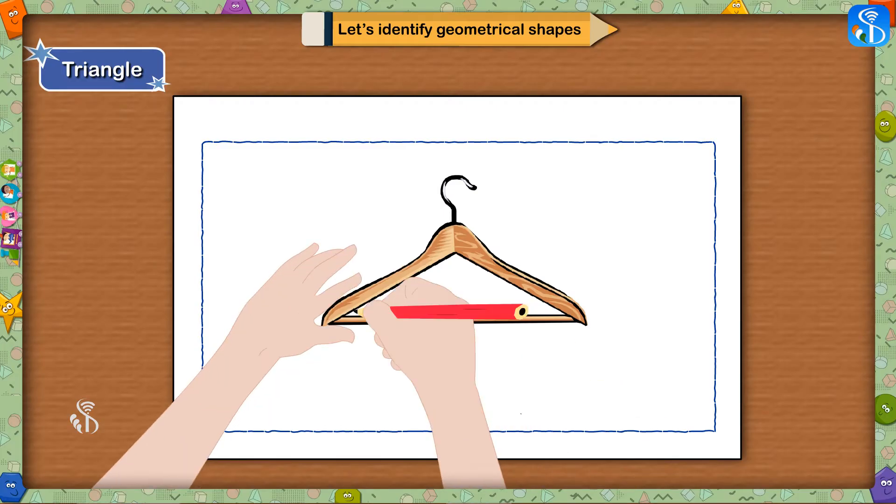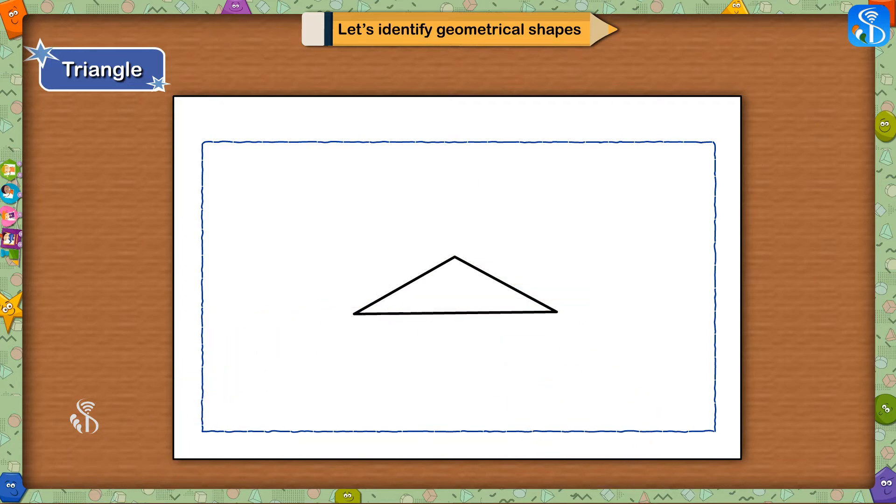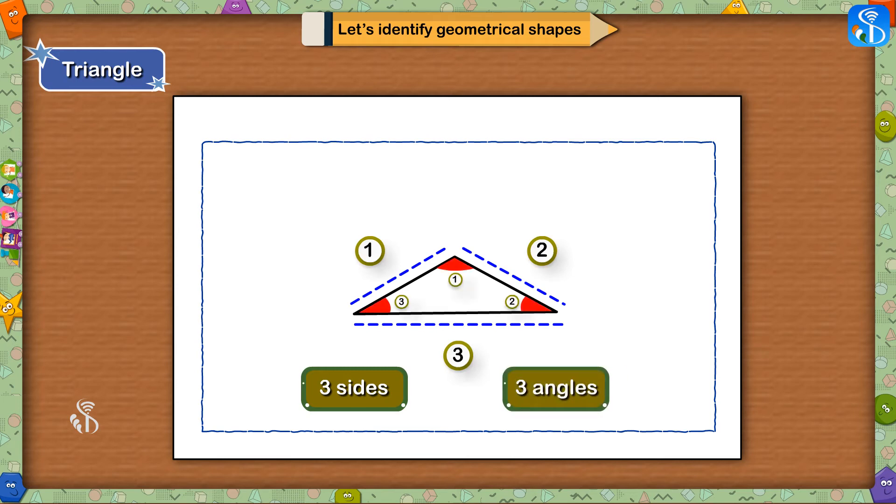Now we will trace the edge of this hanger and draw its shape on the paper. Look here, this shape is called a triangle. A triangle has three sides and three angles.